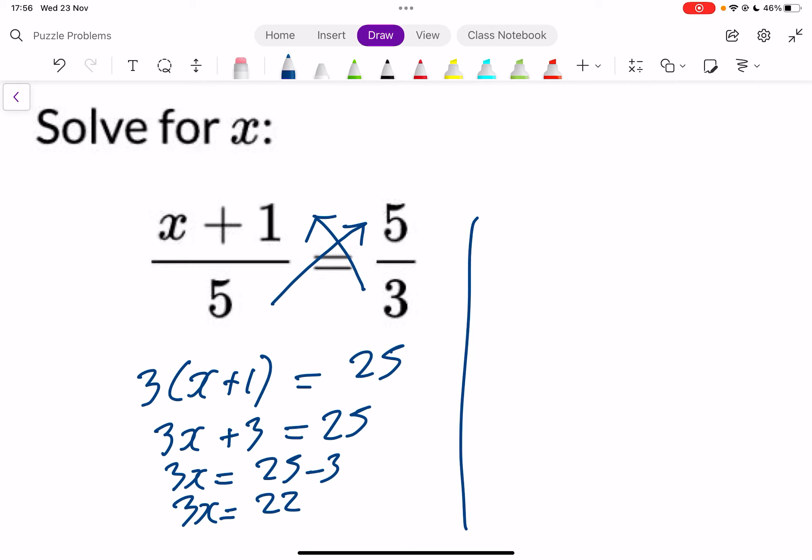I'll just finish that over here. So it was 3x equals 22, and then you're multiplying by 3. The opposite of multiplying by 3 is dividing by 3. So x equals, 3 goes into 22, 7 whole times and 1 left over, and that should be the answer.